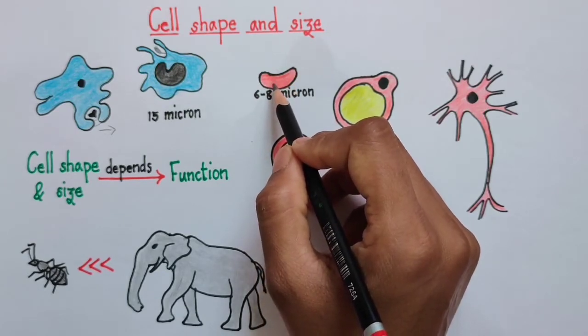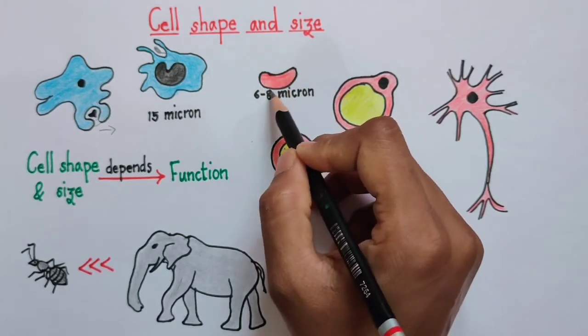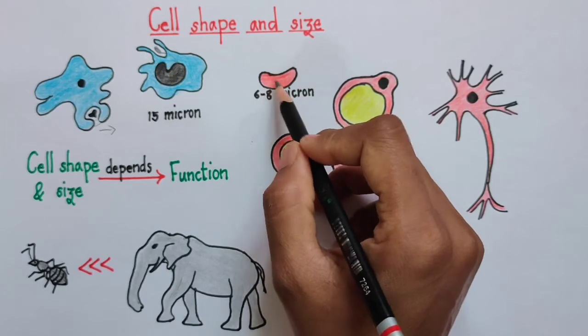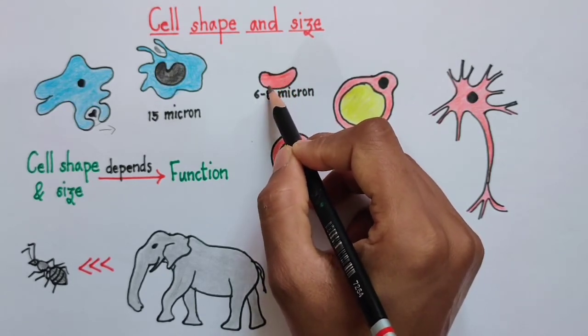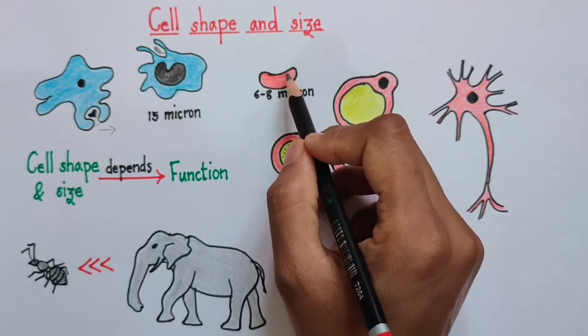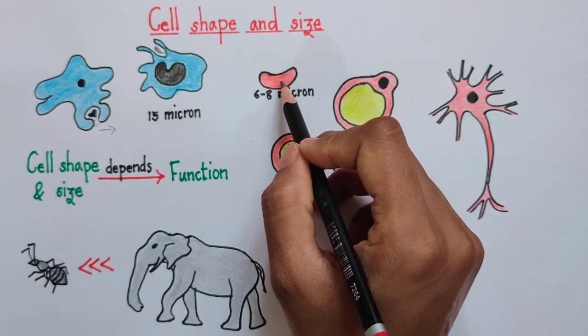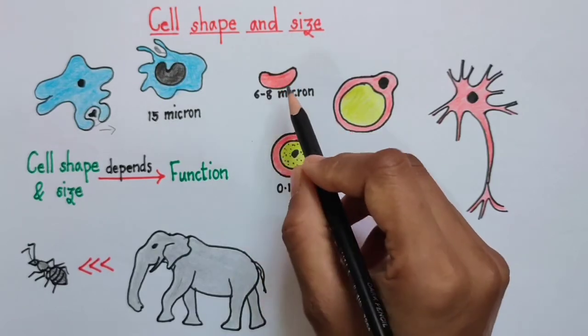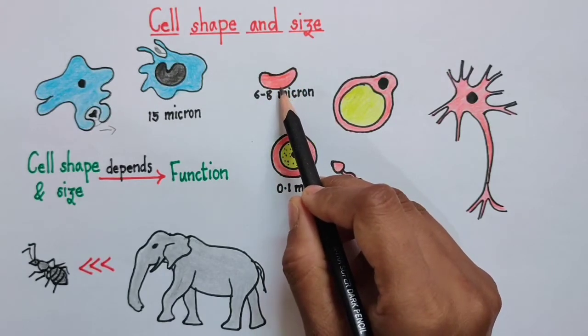We know that RBC helps in the transport of oxygen and carbon dioxide. So this shape allows it to carry more oxygen and carbon dioxide. At the same time, it allows the smooth movement of RBCs in the narrowest of narrow blood vessels, that is our capillaries. So these are the two reasons why RBCs are biconcave in shape.